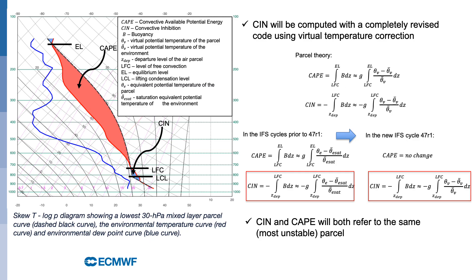In parcel theory, CAPE and CIN are computed as vertical integrals of buoyancy expressed in terms of virtual temperature difference between the lifted air parcel and its environment. Currently,